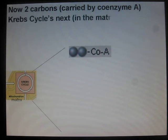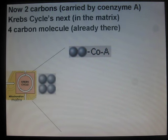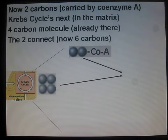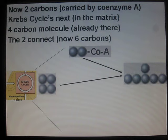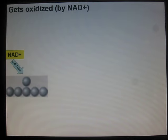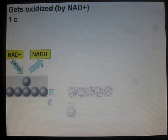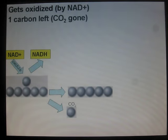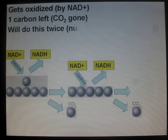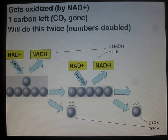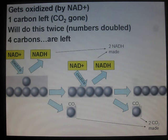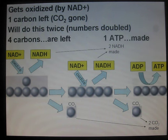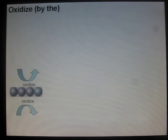Krebs cycle is next, in the matrix. Four-carbon molecules are already there. The two connect — now six carbons. Gets oxidized by NAD+. One carbon left, CO₂ is gone. We'll do this twice — numbers doubled. Four carbons are left. One ATP made. Oxidized — NAD+ and FADH₂.